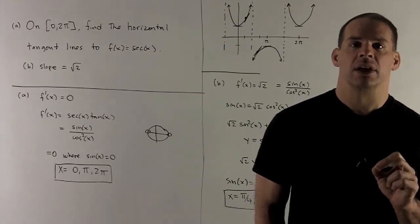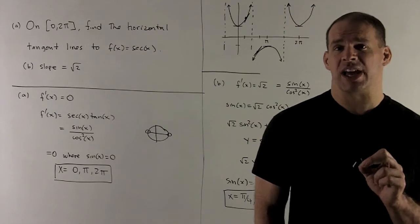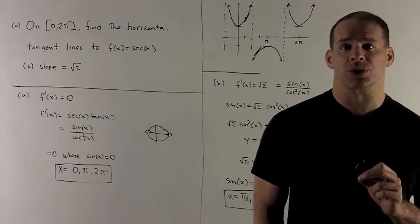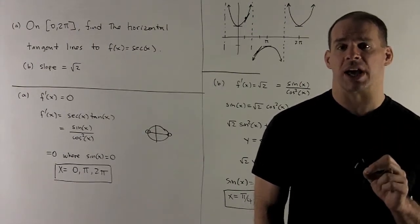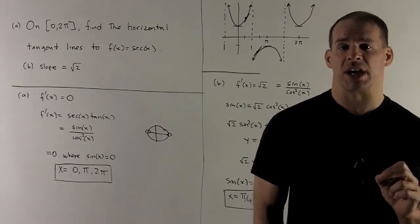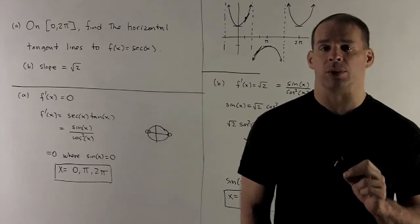To make any sense of this, I want to take sec(x)tan(x) and put it in terms of sine and cosine. Secant is 1/cos(x), tangent is sin(x)/cos(x). So I have sin(x)/cos²(x). We want to know where that's equal to 0.